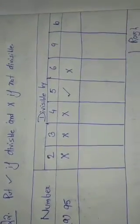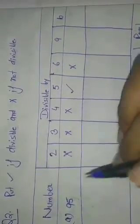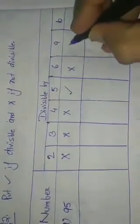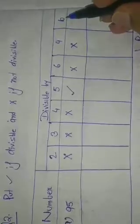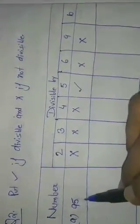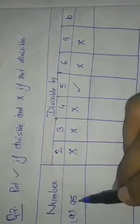Now, divisibility by 9. The rule is: if the sum of the digits is divisible by 9, the number is divisible by 9. Here 9 + 5 = 14. Since 14 is not divisible by 9, 95 is also not divisible by 9 — put a cross. Then, divisibility by 10: the rule is if the ones digit is 0, the number is divisible by 10. In 95, the ones digit is 5, so 95 is not divisible by 10 — put a cross.